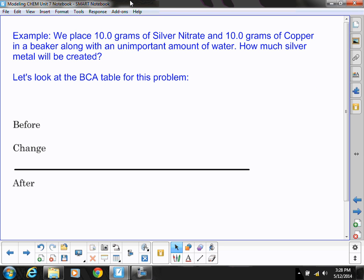So here we have an example problem that we're going to work with while we talk about this limiting versus excess reactants. This is a reaction that we saw during the types of reactions lab where we combine 10 grams of silver nitrate with 10 grams of copper in a beaker with an unimportant amount of water.